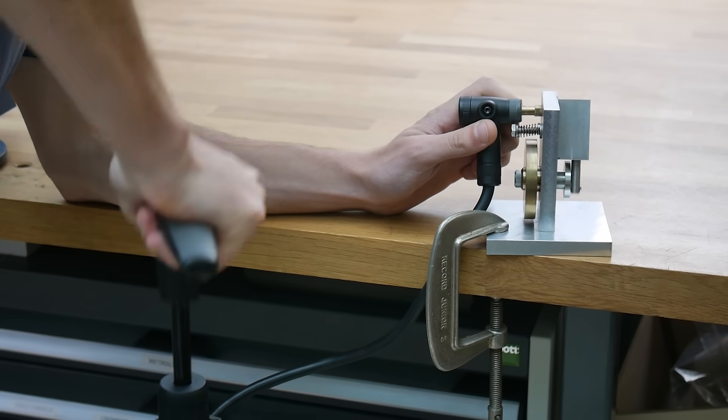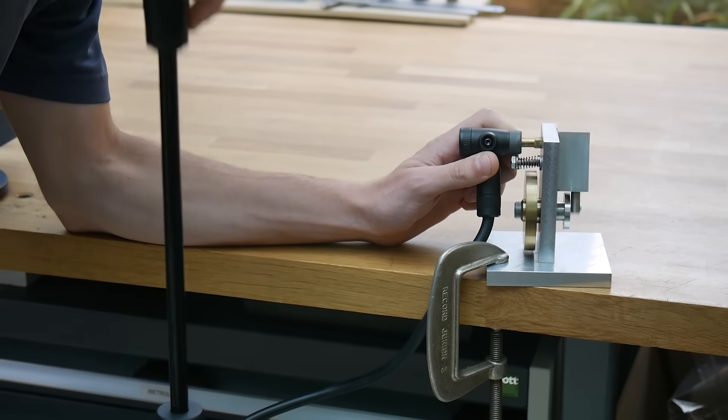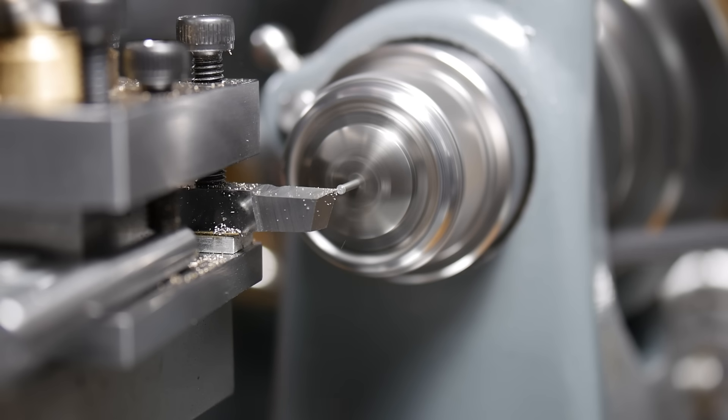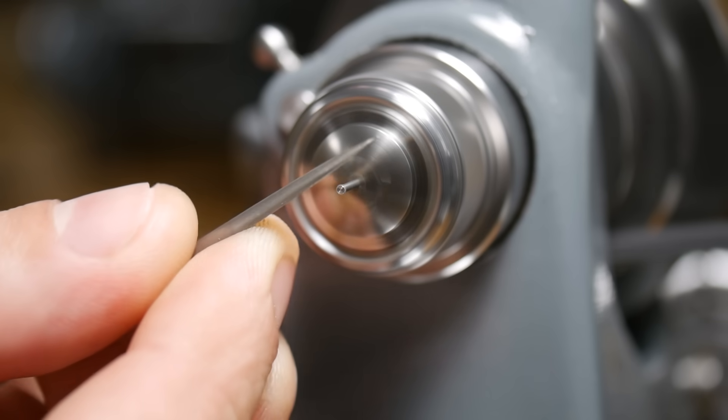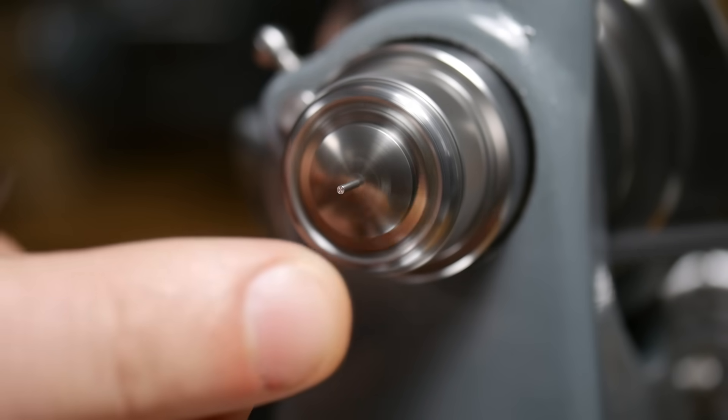This engine design is called an oscillating steam engine, and you can even run them with a bicycle track pump. Although these engines are simple, there are challenges that we need to overcome when we scale it down. Even simple parts are difficult to make, but with some thought, we can address these challenges with design.